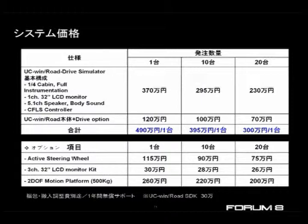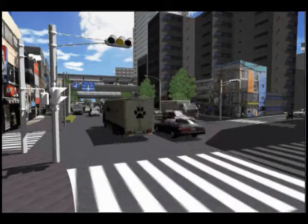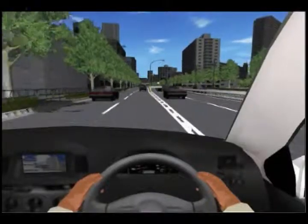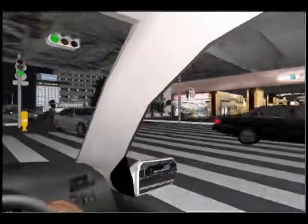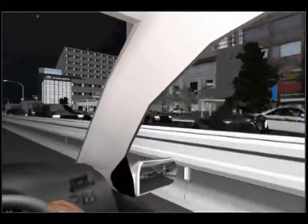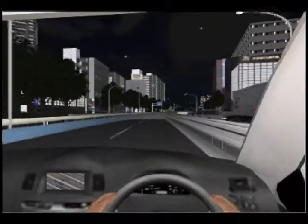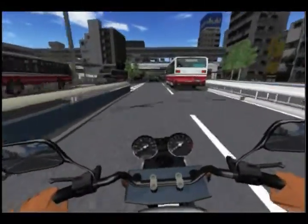The UC-Win software is an international version, so it supports Japanese, English, Chinese, French, and Korean. We can also create customized versions of SDKs for specific needs. There has been a lot of co-development with universities and research institutions. For example, some customized versions have included special effects for collision impacts and the ability to measure the distance between vehicles.